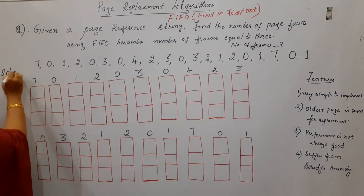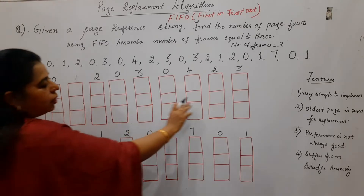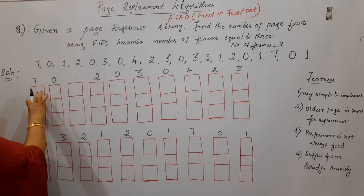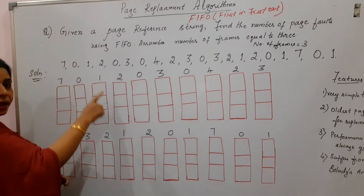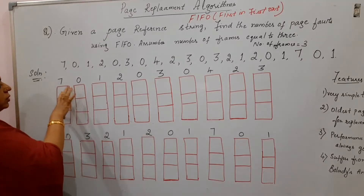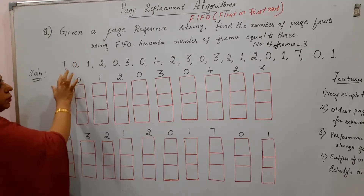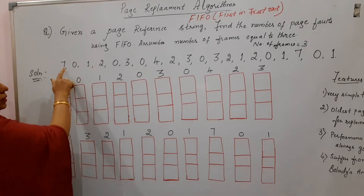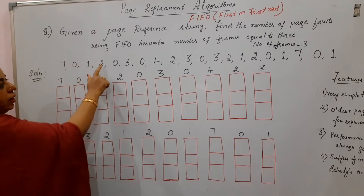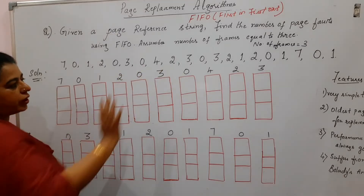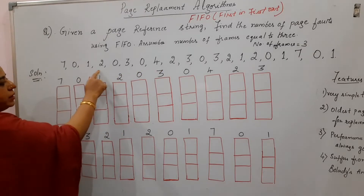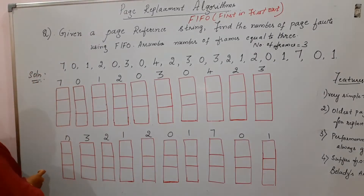The solution starts here. You first sketch all these partitions — this represents the physical memory. If there are 20 pages in the reference string, you sketch the physical memory 20 times. On top of the physical memory, you simply copy the page numbers: 7, 0, 1, 2, and so on for all 20 pages. Let us start solving the problem.